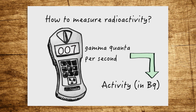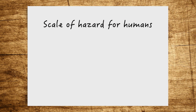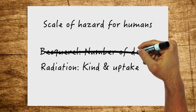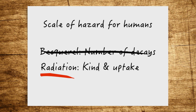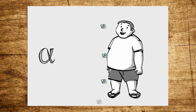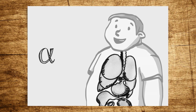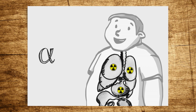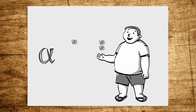Does that mean that a substance is more dangerous for humans the more Becquerels it contains? No, because it's not the number of decays in Becquerels that poses a threat to humans — it's the radiation generated during these decays. So it depends on how and how much of what kind of radiation enters the body. So-called alpha radiation, for instance, does not penetrate the body from the outside, but it can damage cells from inside the body. If an activity of 1000 Becquerels were incorporated through food or inhaled into the body, this would be more dangerous than a multiple of this quantity held in one's hand. So the activity in Becquerels alone does not say anything about whether or to what extent people can be at risk.